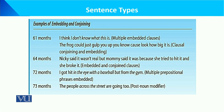At 64 months of age, we have this example: 'Nikki said it wasn't real, but mommy said it was because she tried to hit it, and she broke it.' This shows both embedded and conjoining clauses, demonstrating how sentence complexity increases as children's age increases.